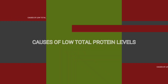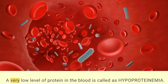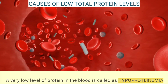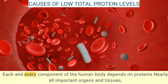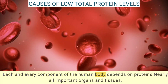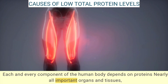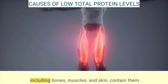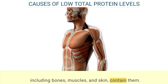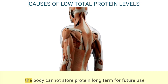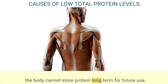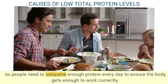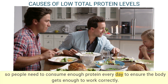A very low level of protein in the blood is called hypoproteinemia. Every component of the human body depends on proteins — nearly all important organs and tissues, including bones, muscles, and skin, contain them.